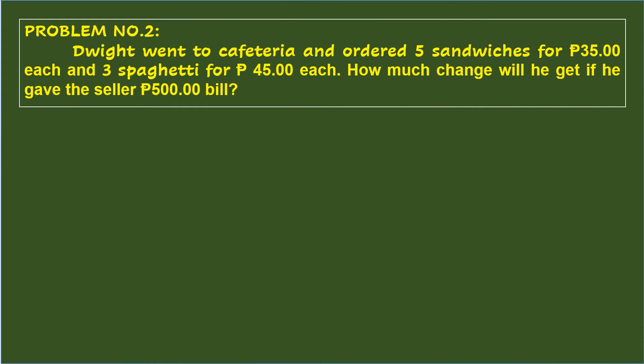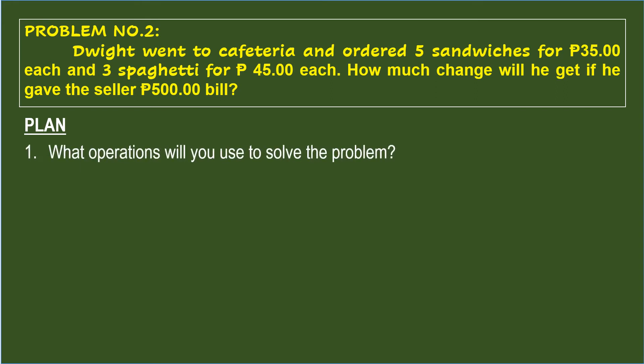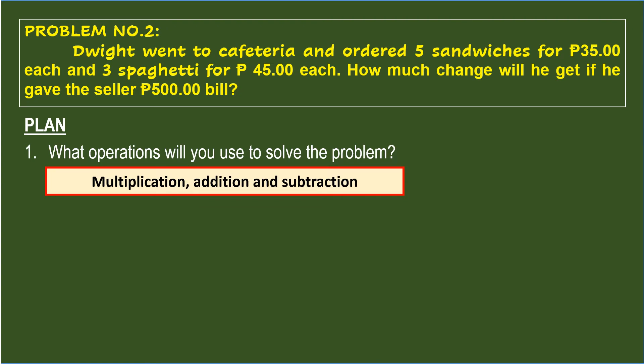After understanding the problem, next is to plan. What operations will you use to solve the problem? Using the given facts, you will multiply 5 sandwiches by 35 pesos and multiply 3 spaghetti by 45 pesos, then add the products, and subtract the total from 500 pesos. Therefore, the operations are multiplication, addition, and subtraction.